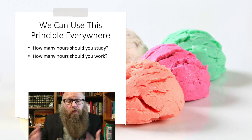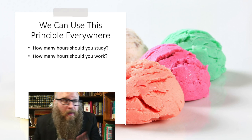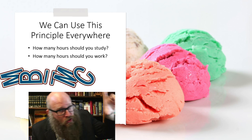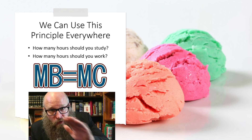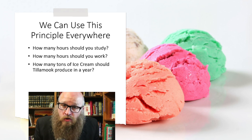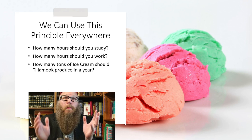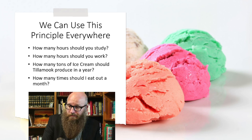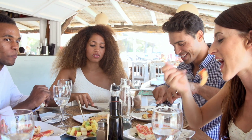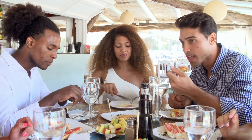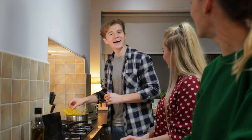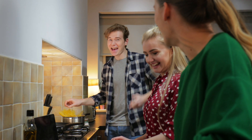How many hours should you work? Remember, the opportunity cost of work is what else you could be doing with your time. Yes, you're getting the benefit of the pay, but you're giving up something else along the way. Eventually, marginal benefit equals marginal cost and you should stop working. It's not just for individuals — producers need to ask how many tons of ice cream should Tillamook produce this year? And on the consumer side, how many times should you eat out this month? Eating out is great, but eventually that marginal cost really starts to increment up. The opportunity cost of eating out is eating groceries at home, which are substantially cheaper.